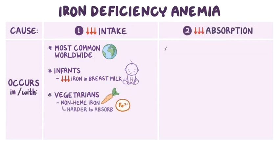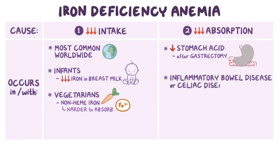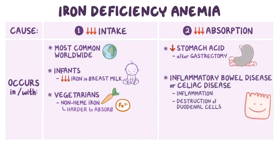Decreased absorption can also occur when there's a decrease in stomach acid production, like after a gastrectomy, where a part of the stomach is surgically removed. Decreased absorption can also occur with inflammatory bowel disease or celiac disease, both of which cause inflammation and destruction of duodenal cells.